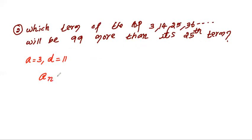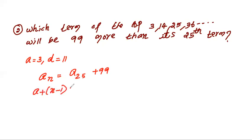I need to find which term is 99 more than its 25th term, so I have to find the nth term. Let me assume the nth term is the required term. So An equals A25 plus 99. A25 can be written as A plus 24D according to the nth term formula, plus 99.